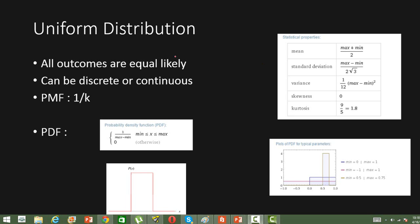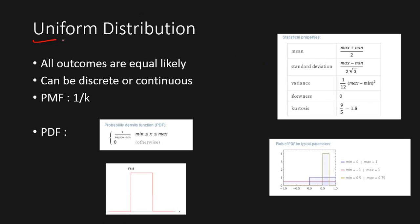In this video, I am going to introduce to you what is known as uniform distribution. Uniform distribution is a kind of probability distribution wherein the outcomes of random experiments are equally likely to happen.